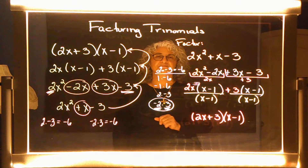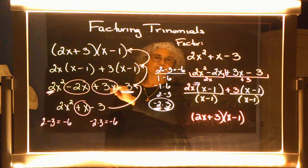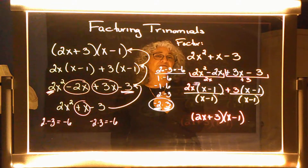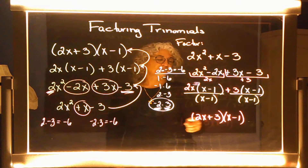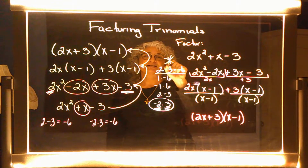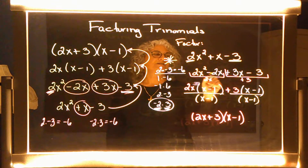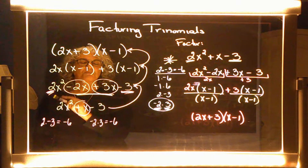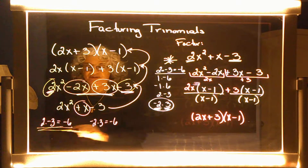So a little recap: when we were given this multiplication problem, these were each of the steps it took to get from the multiplication problem to the answer. And now when we have to go backwards — when we're given the answer and they say factor — we have to go back and find each of these lines to find the original multiplication problem. The key is understanding that the first number multiplied by the last number is going to find the middle two terms.